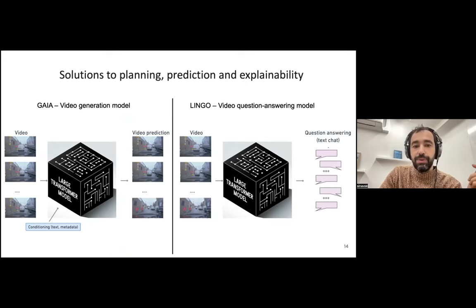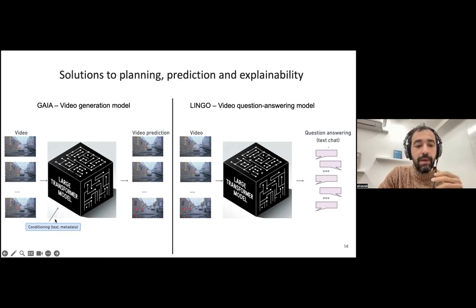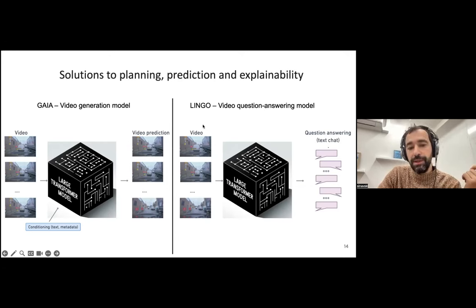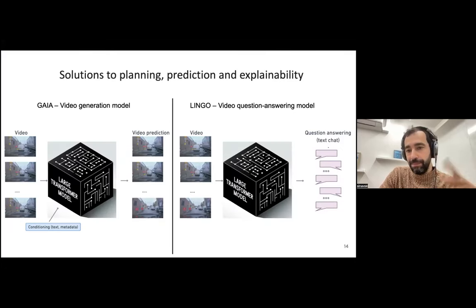Our solutions to those two limitations were the development of two generative AI models. One is called Gaia — a video generation model that takes a video input and some conditioning and produces a video output. The second model is Lingo, a video question-answering model that takes a video and provides answers to your questions. I'll demo that and show how we approach solving the explainability and prediction planning problems.